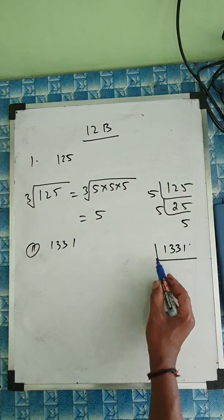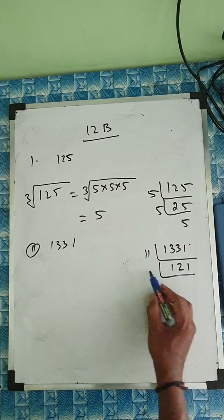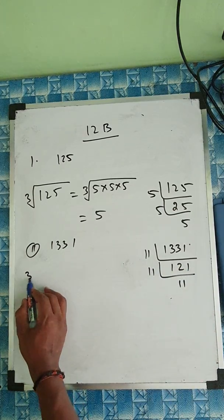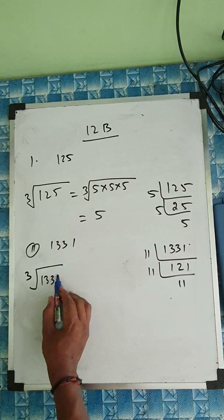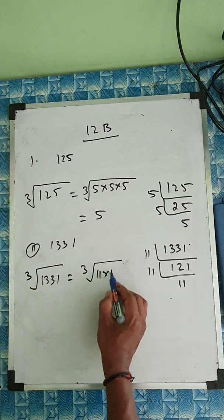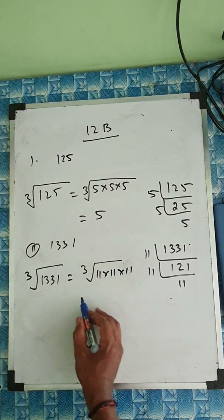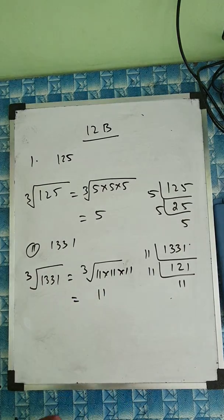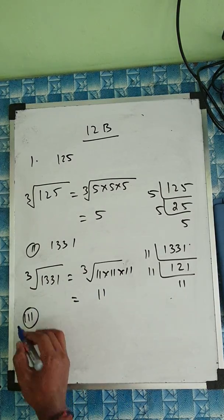Question number 2: 1331. We factorize it as 11 × 11 × 11. So the cube root of 1331 equals the cube root of 11 × 11 × 11, and the answer is 11.